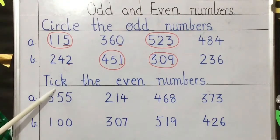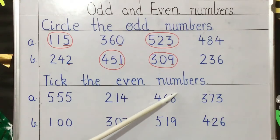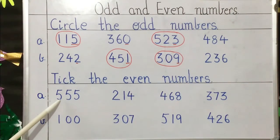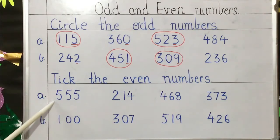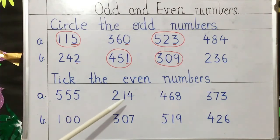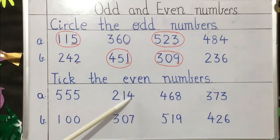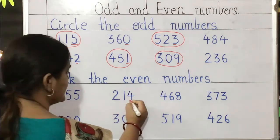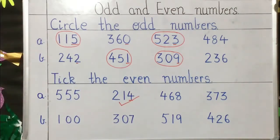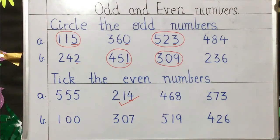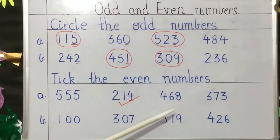Now the next question is: tick the even numbers. The number given is 555 — we check the last digit, here it is 5 — so this will not be an even number. The next number is 214 — the last digit is 4, and a number ending with 4 is an even number — so we will tick 214. The next number is 468 — the last digit is 8, and a number ending with 8 is an even number — so we will tick this number.